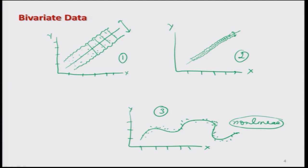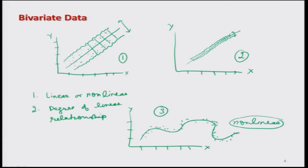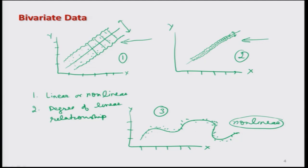So now we are talking about two features. The first feature is whether the relationship is linear or non-linear, and the second is the degree of linear relationship. For example, the degree of linear relationship in figure 1 is more than in figure 2. The question is how to measure it, and for that we have the concept of correlation coefficient.